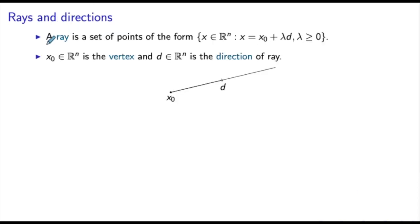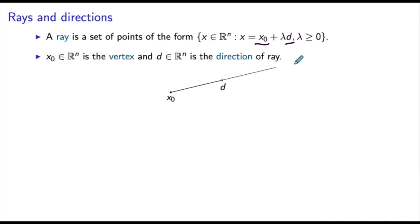A ray is the set of points of the form x0 plus lambda d for all lambda greater than or equal to zero. A ray is defined by the point x0, called the vertex of the ray, and the direction d. Geometrically, a ray is the set of all points obtained from x0 by moving along the direction d.